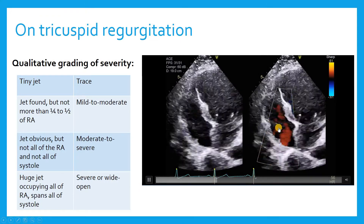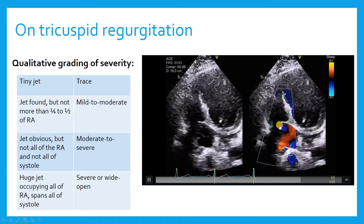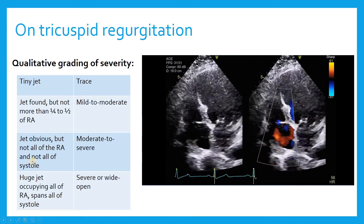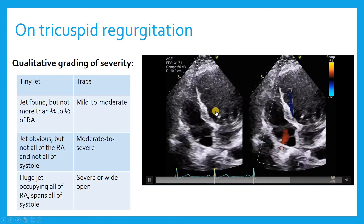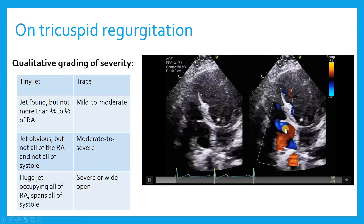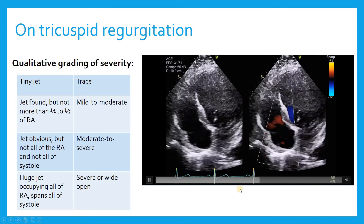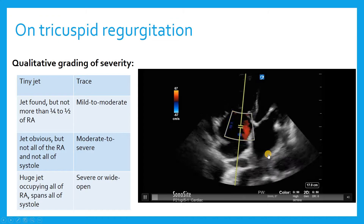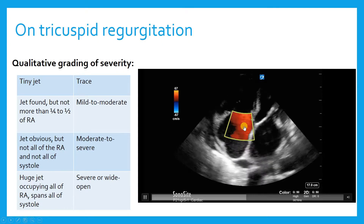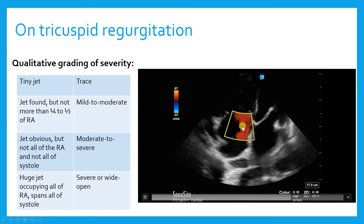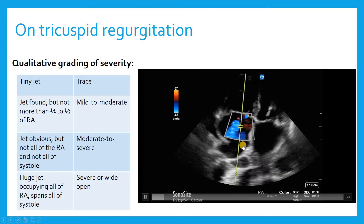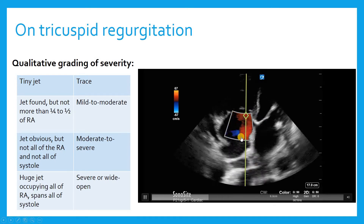Looking at this first example, the TR jet is actually readily visible, but it's not going to meet any criteria for moderate to severe. This would probably be trace to mild — certainly no more than an eighth of the right atrium. Contrast that to the second patient: when I first looked at it the jet didn't look very good, but with a different probe angle, this is now probably a moderate regurgitation signal occupying almost half the right atrium.